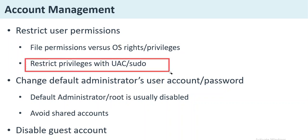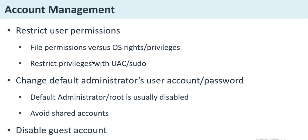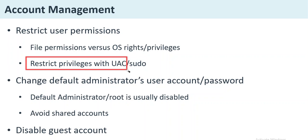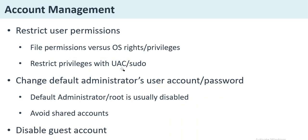Restrict privileges with UAC — User Account Control — and sudo. In Windows, even though you are an administrator, you normally operate as a regular user. If a task requires elevated privileges, a UAC prompt will pop up. In Linux, you use sudo followed by the command to run it as root, which is the privileged account in Linux.